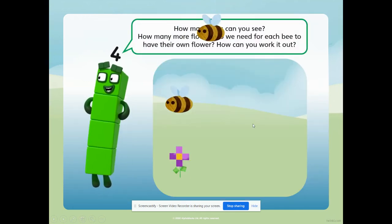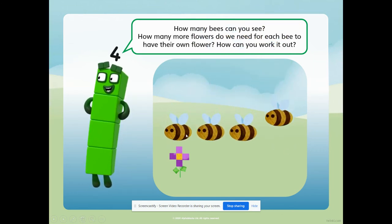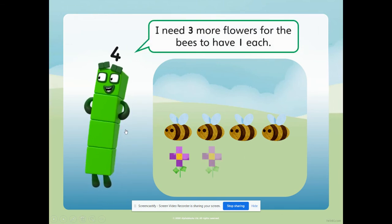How many bees can you see? Oh, look at these buzzy bees - beautiful creatures. One, two, three, four. How many more flowers do we need for each bee to have their own flower? How can we work it out? Well, one bee has one flower, so we've got three more bees - that makes four. So how many more flowers do we need? We need three more. I need three more flowers for the bees to have one each. Let's count to make sure we're right. One, two, three, four. Four claps.